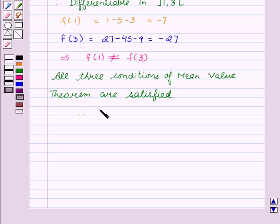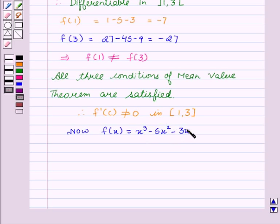Therefore, f'(c) ≠ 0 in the closed interval [1,3]. Now, we are given f(x) = x³ - 5x² - 3x. We will find f'(x) which will be equal to 3x² - 10x - 3.